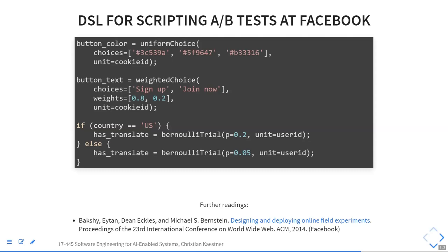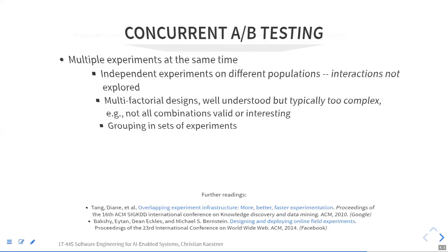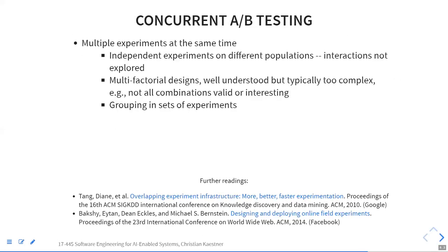Facebook uses some internal language where they have a whole language around different treatments and probabilities about who will see which treatment. They have their own domain-specific language for scheduling and running experiments. When you run multiple experiments concurrently, you also need to think about experimental design, interactions, and multifactorial designs. You can automate a lot of this.